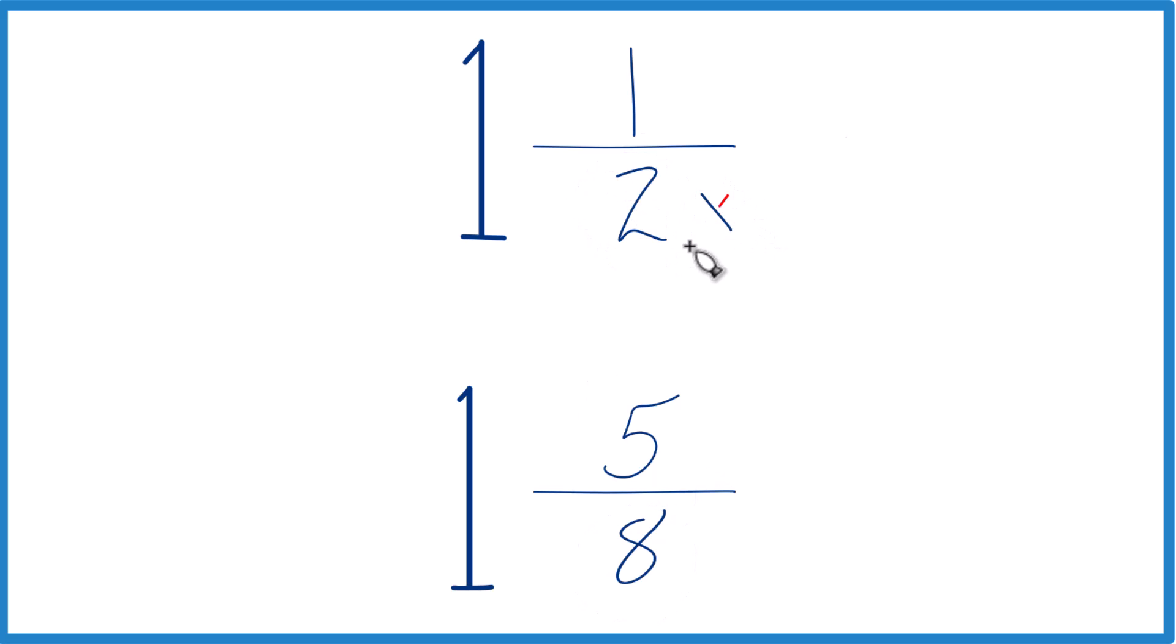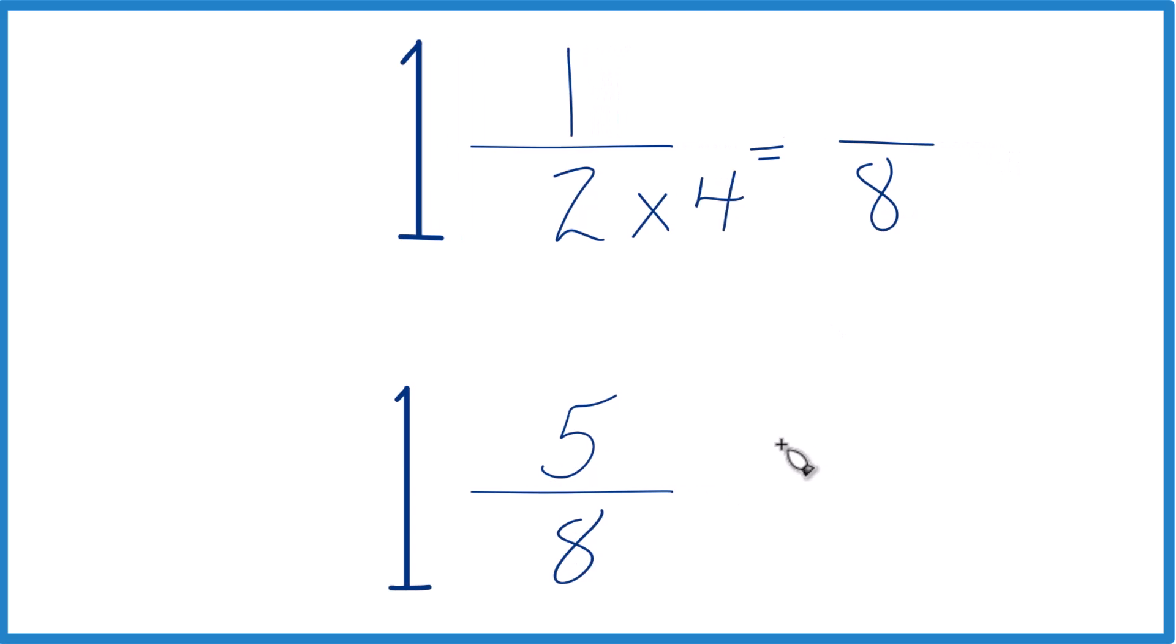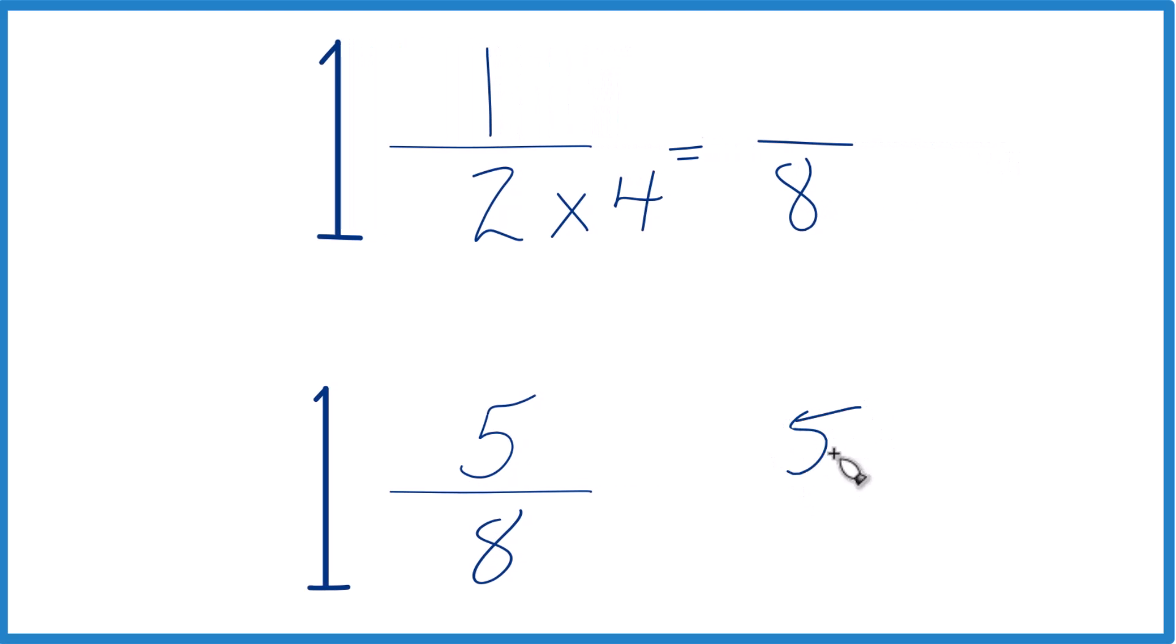So let's multiply 2 times 4, because that would give us 8. We already have 8 down here. So let's just bring this over 5 eighths. Since we multiplied the denominator by 4, we do also need to multiply the numerator by 4. Since 4 over 4 is 1, multiplying by 1 doesn't change anything.